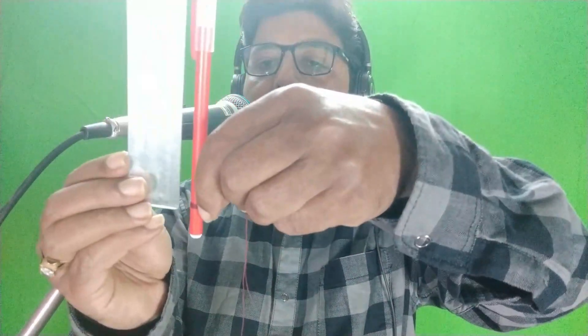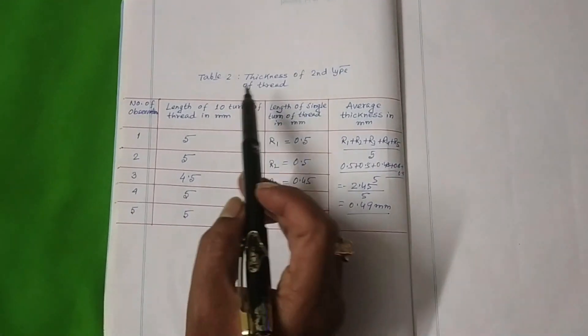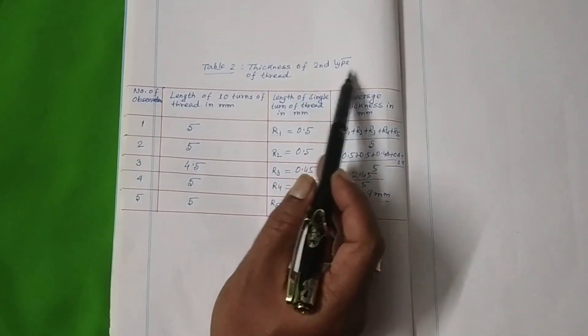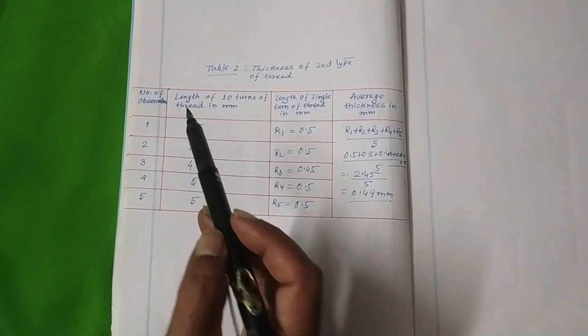The height reading is 1. We have the same scale. Here we can see that 0 is equal to 1 mm, 2 mm, 3 mm. So 3 mm is equal to 2 mm. We have the same table as table 3, the same type of thread. The same reading can be equal to 3 mm.